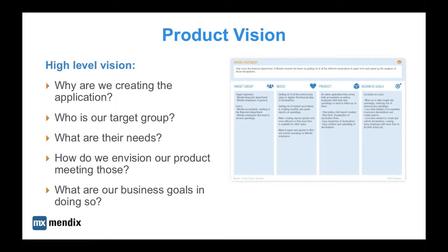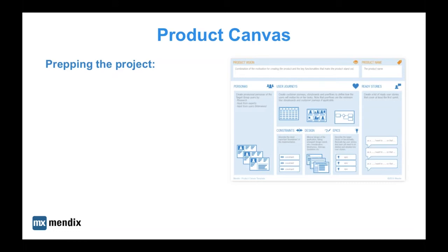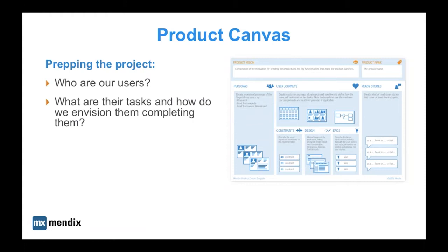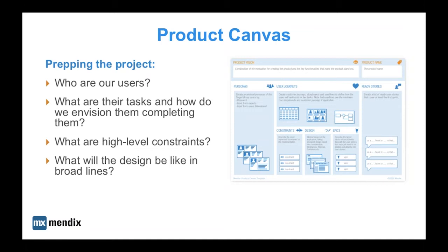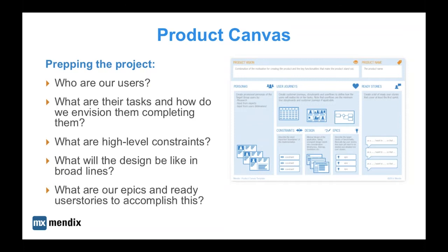Let's prep the project by answering with a bit more detail the following questions. Personas will answer who our users are. We'll use user journeys to give body to the users' tasks and their way of completing them. High-level constraints could be, for example, 'it's only available on tablets' or 'it needs to work within a single sign-on environment.' The design section answers how we're going to realize the user journeys — what do we need to build to interact with our users. From all this we can identify epics and user stories to get the first sprint going.